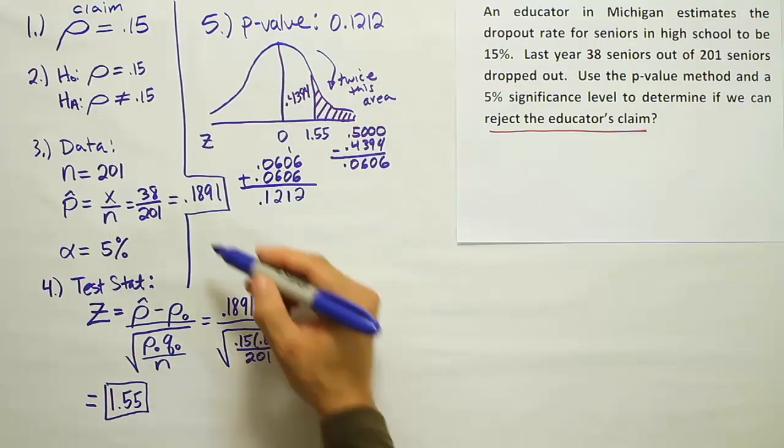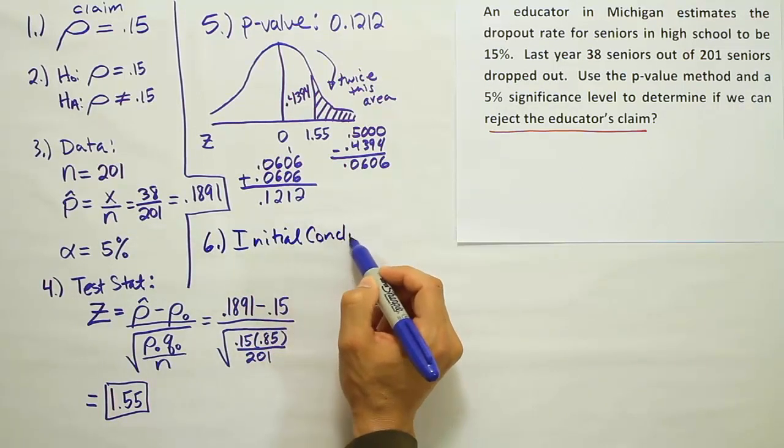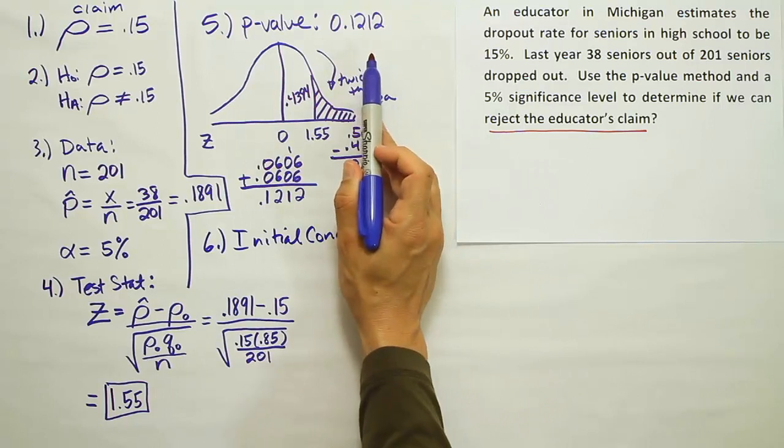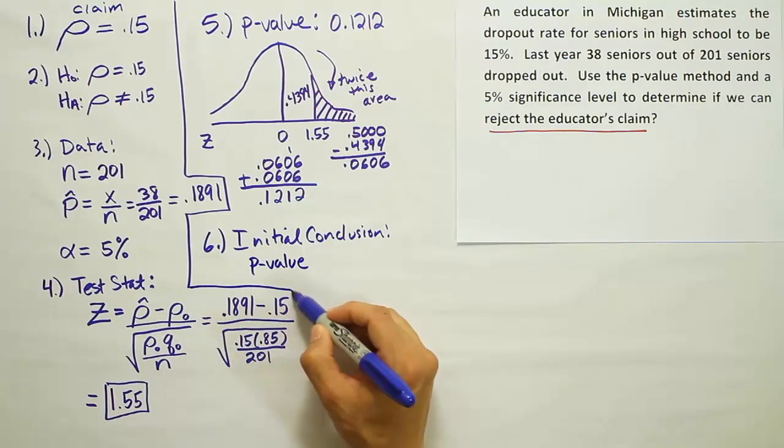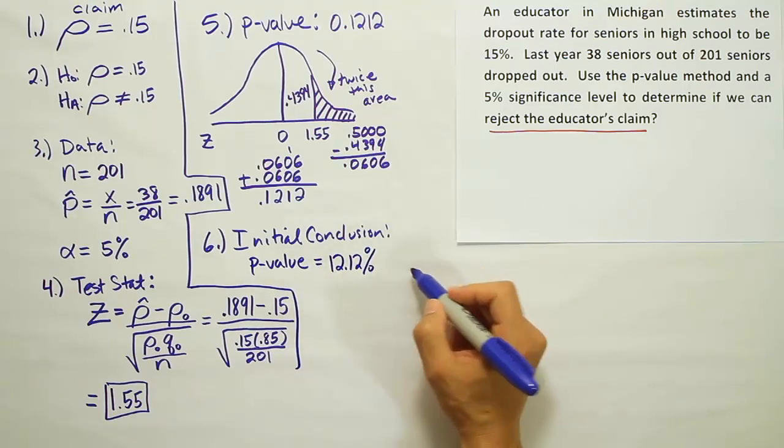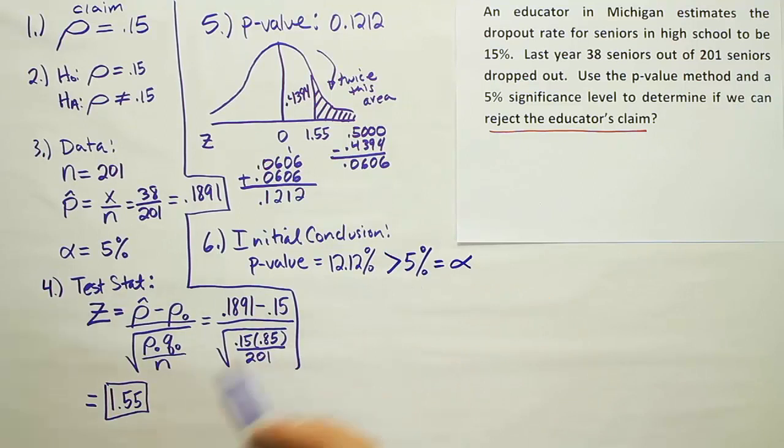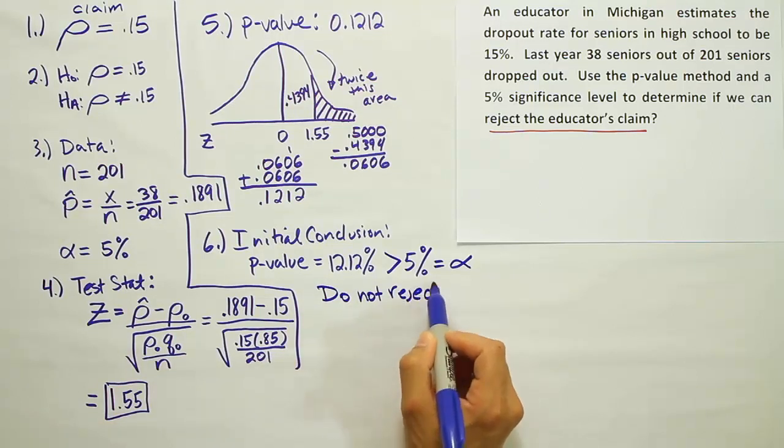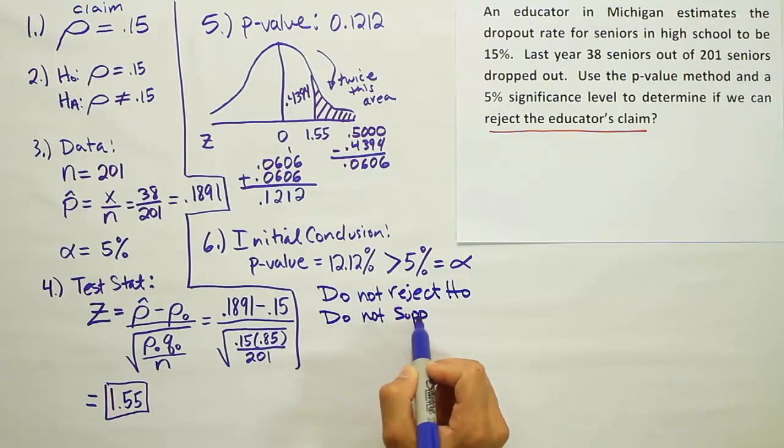Alright, good. Once you have the p-value, we do our step 6, which is to do the initial conclusion. The initial conclusion is based on a comparison here between the p-value and the significance level. So the p-value is this large number, 12.12%. We're going to compare that to our 5% significance level and realize that the p-value is larger. When the p-value is large, we do not reject H0. So we're going to say do not reject H0, and therefore we do not support HA.